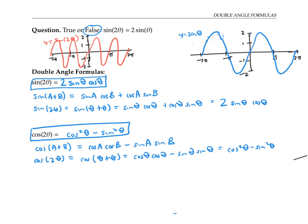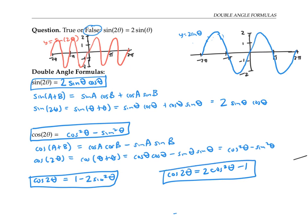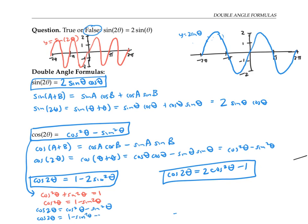Now there are a couple of other popular formulas for cosine of two theta. One of them is one minus two sine squared theta. You can get this from the original formula using the Pythagorean identity. We know that cosine squared theta plus sine squared theta equals one, so cosine squared theta equals one minus sine squared theta. Plugging that into the original formula, instead of cosine squared I write one minus sine squared theta, and I still have another minus sine squared theta, giving one minus two sine squared theta.